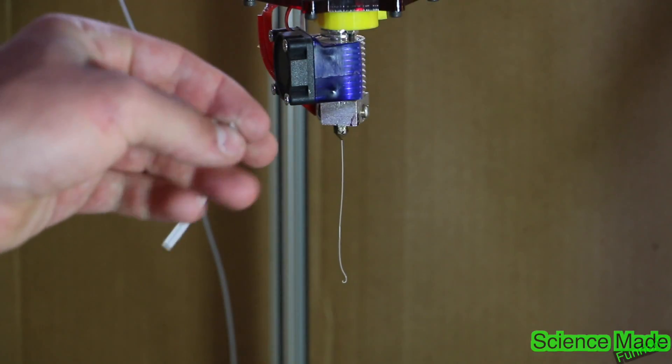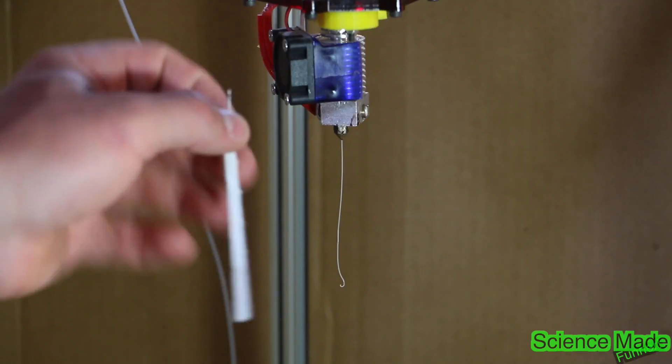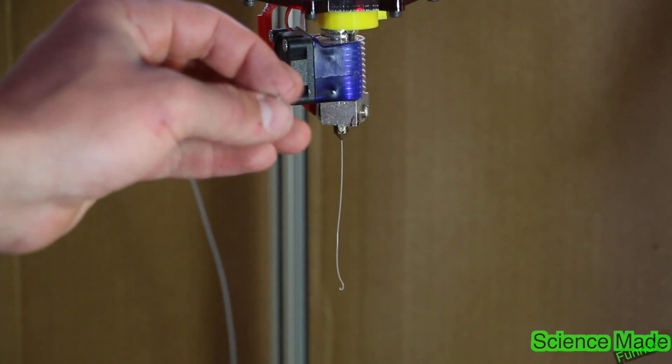Now this wire happens to be the thickness of a 0.3 millimeter tip. Sometimes they're a little thicker and sometimes they're a little thinner, but they're basically 0.3 millimeter.